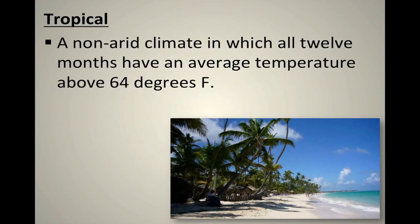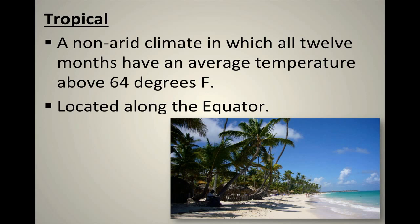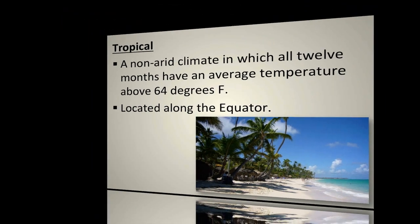Let's start with tropical. It's non-arid, which means it gets a lot of rainfall — non-dry, meaning it's wet. It's a non-arid climate in which all 12 months have an average temperature above 64 degrees. In other words, it's one steady season — it doesn't have four seasons or even two. The average monthly temperature does not fall below 64 degrees. All tropical climates are located along the equator.